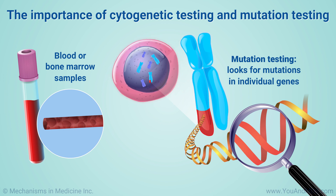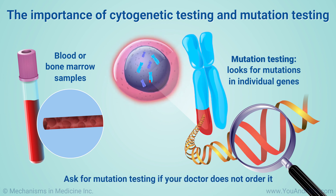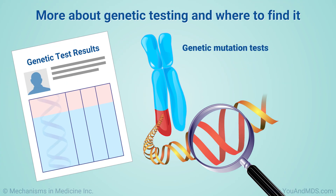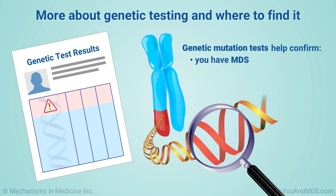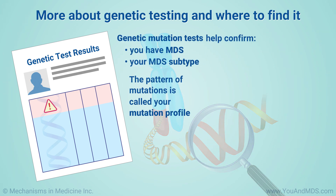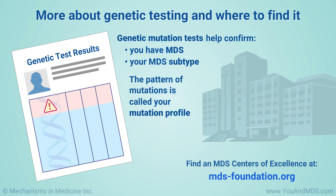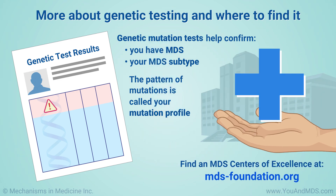If you are diagnosed with MDS, it is a good idea to ask for mutation testing if your doctor does not order it. Genetic mutation tests help confirm that MDS is what you have. They also provide information about your type, also called your subtype, of MDS. The pattern of mutations is called your mutation profile. In the United States, many health centers have MDS Centers of Excellence. These centers offer the latest information on cytogenetic and genetic mutation testing and interpretation. You can find these centers at MDS-Foundation.org.